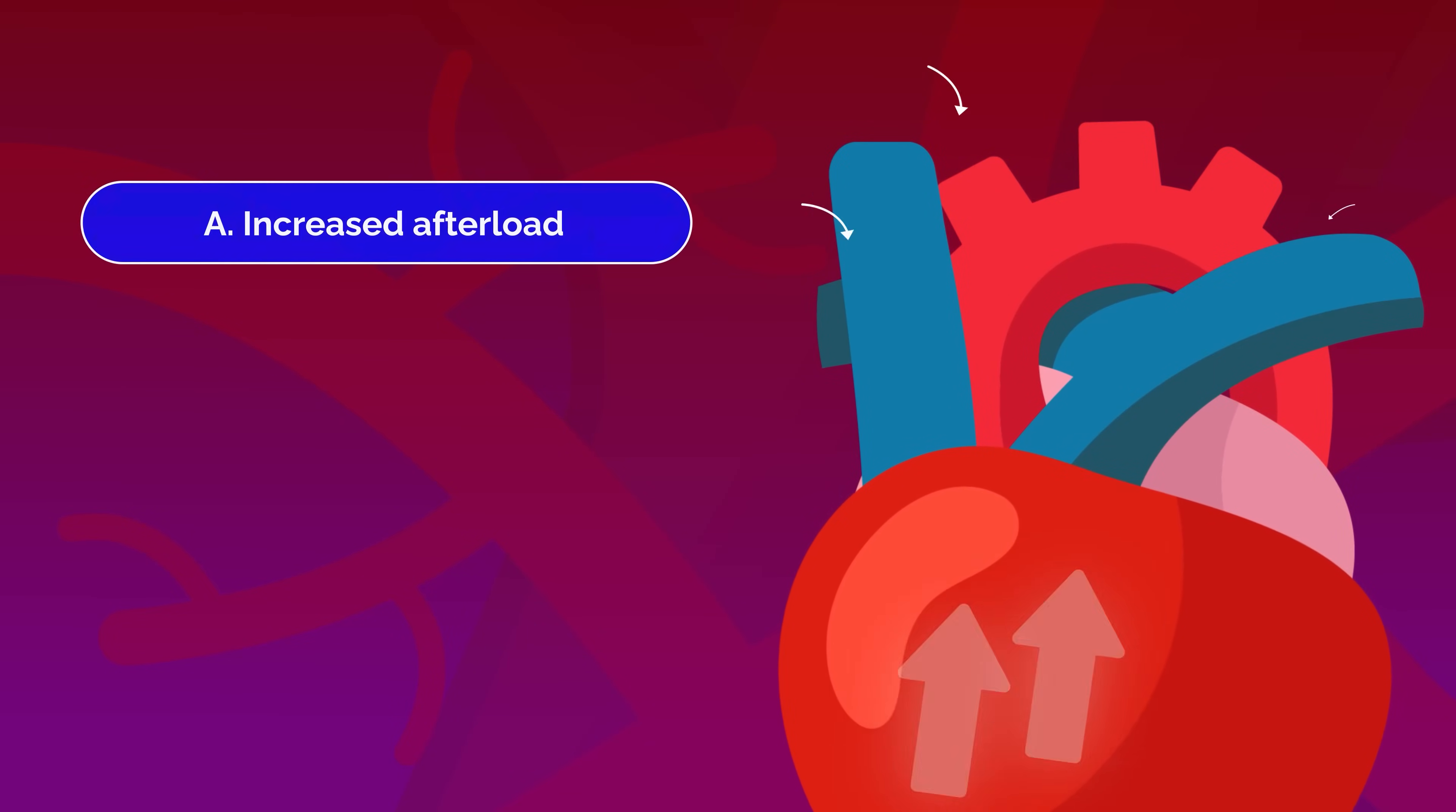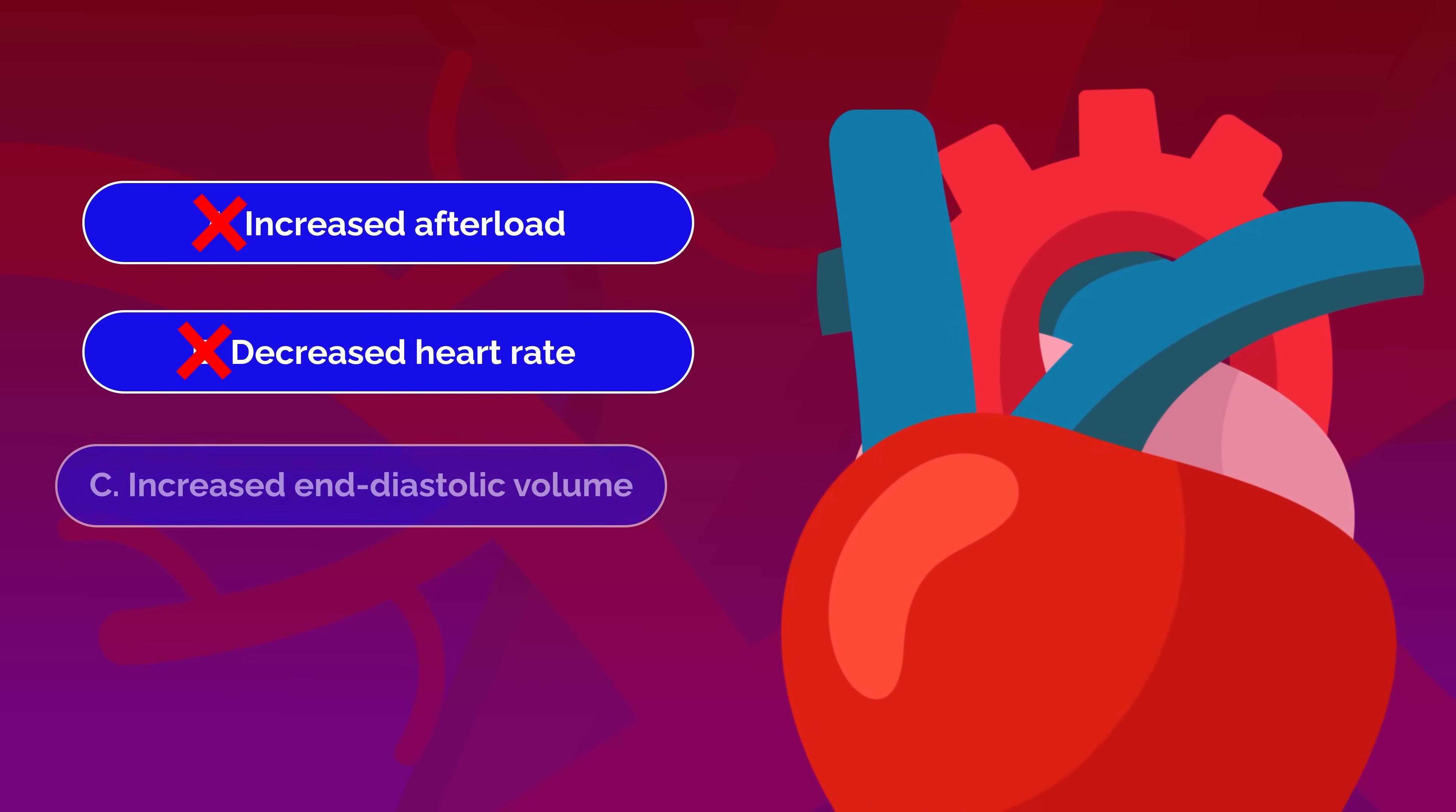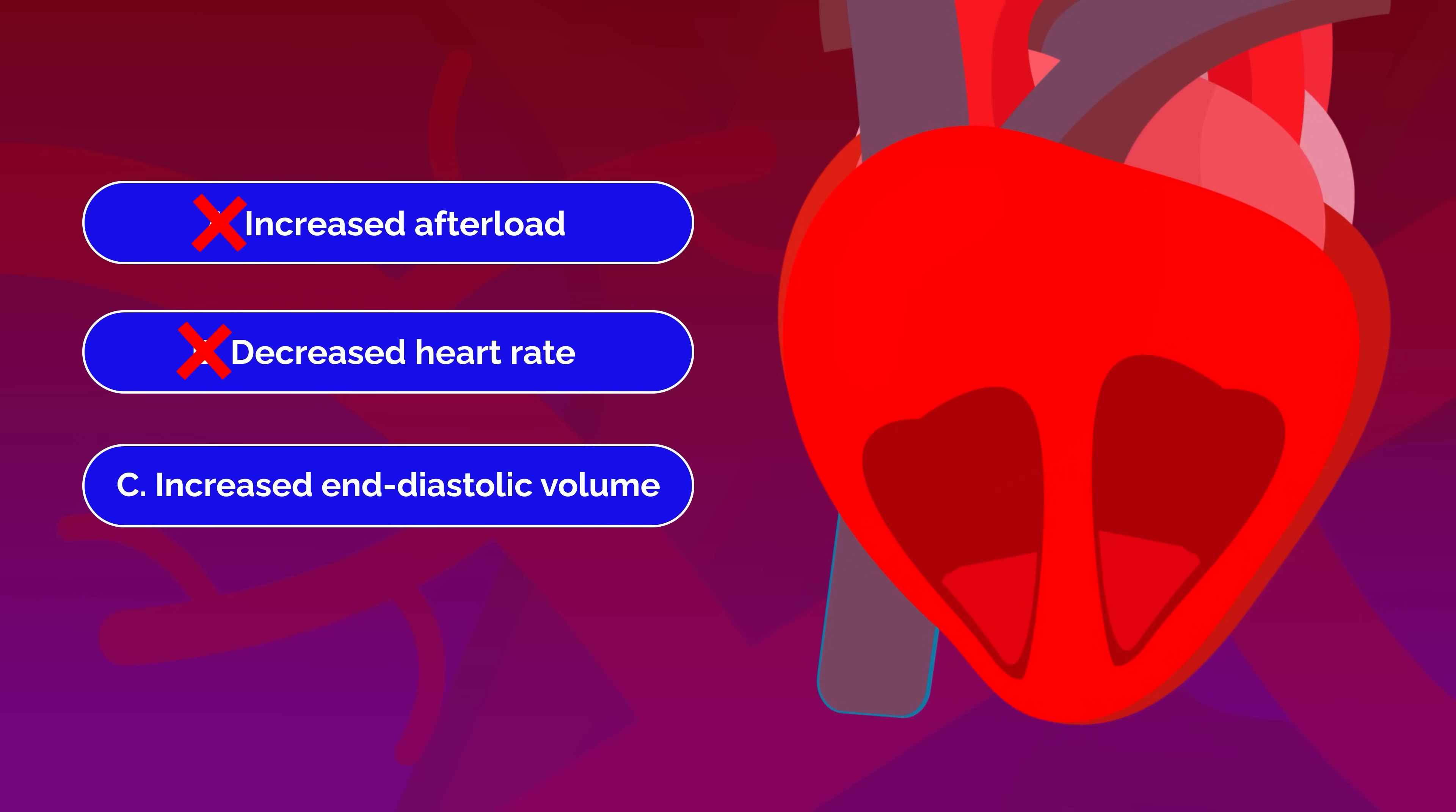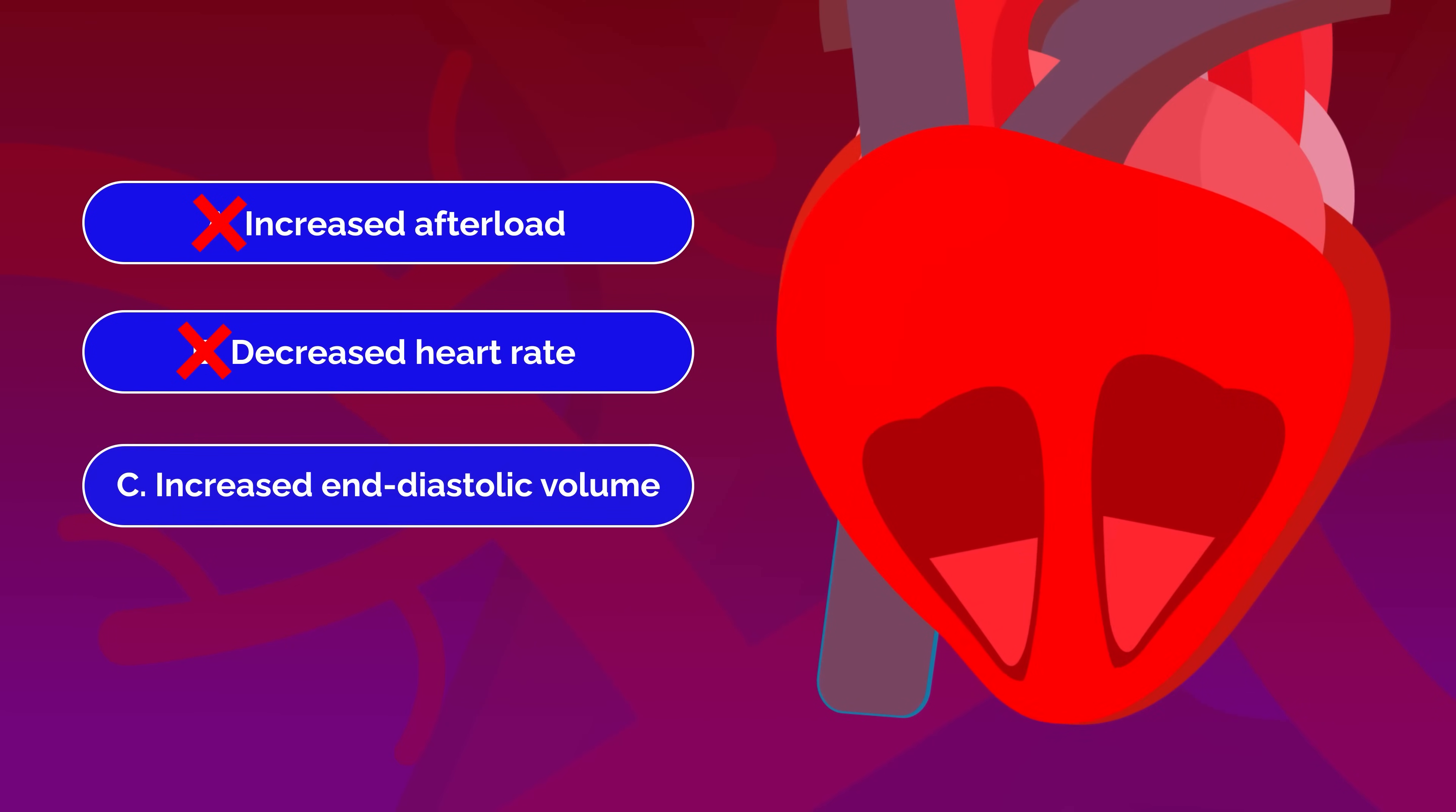So which option would help? With A. Increased afterload. It would make it harder to eject blood, which means it worsens the stroke volume and is not compensatory, so you can eliminate it. With option B. A decreased heart rate would reduce cardiac output, so this answer choice can be eliminated. With option C. Increased end diastolic volume leads to more preload. This can stretch the myocardium and enhance contractility via the frank-starling mechanism, which would help maintain cardiac output.